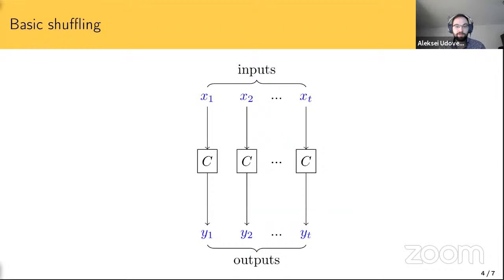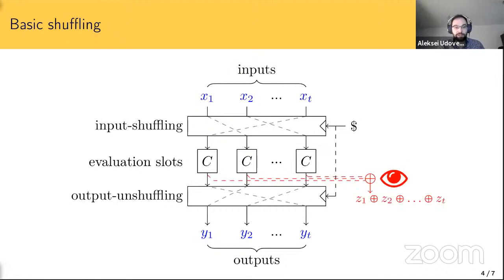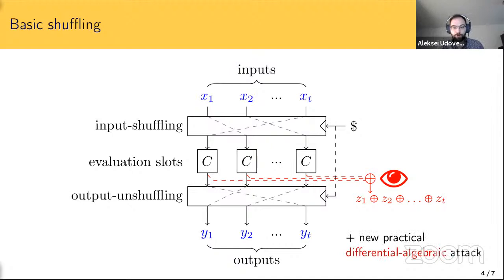Switching to the second countermeasure: shuffling. Assume an implementation computes the same function t times in parallel — for example, AES computes the same S-box 16 times per round. The idea of shuffling is to randomize the order of computations. Although shuffling seems like a complex non-linear procedure, it is not sufficient: the sum of all values is independent of the shuffling order and is a linear function of the computed values. A new differential algebraic attack can break basic shuffling at minimal cost.